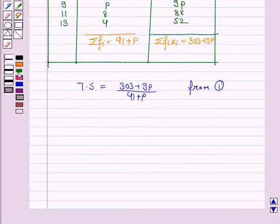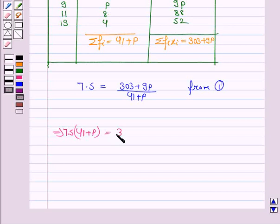This implies 7.5 times (41 plus P) is equal to 303 plus 9P by cross-multiplication. Now 7.5 into 41 is 307.5.